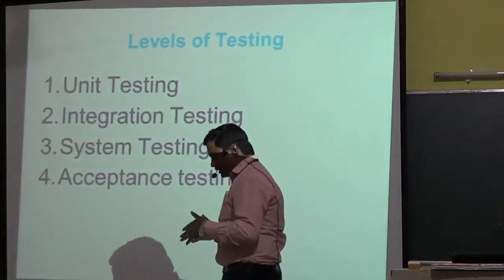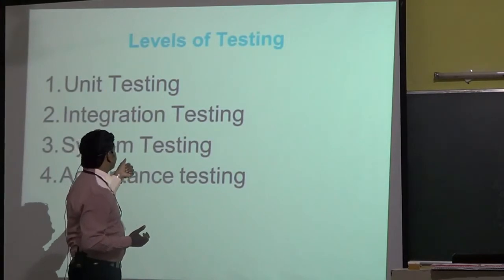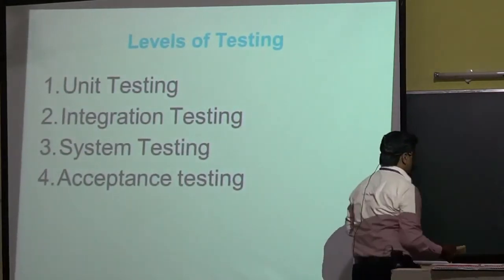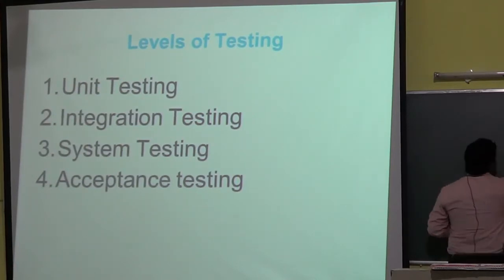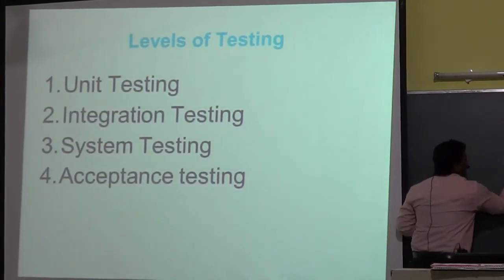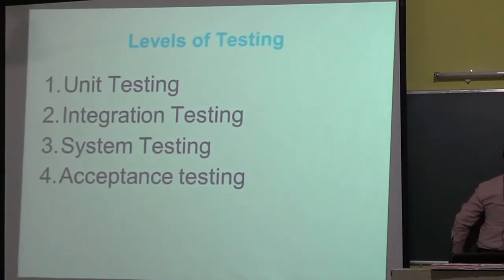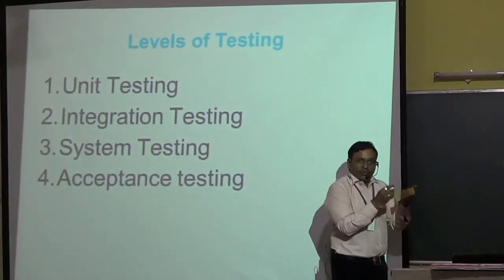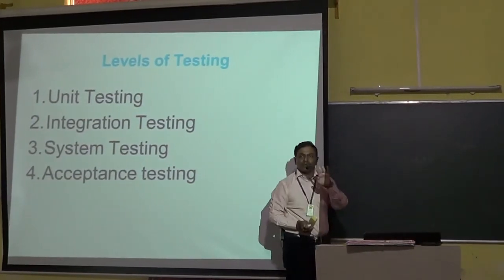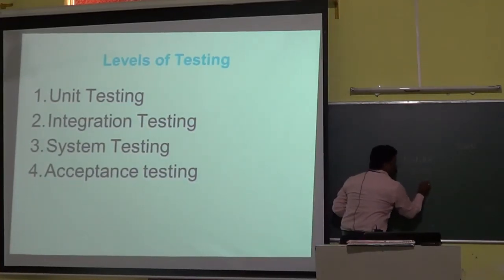The levels of testing focus on four different parts: first is unit testing, second is integration testing, third is system testing, and fourth is acceptance testing. To understand this, we take the example of developing a calculator software for banking purposes. The requirements are four functional modules: addition, subtraction, multiplication, and division.